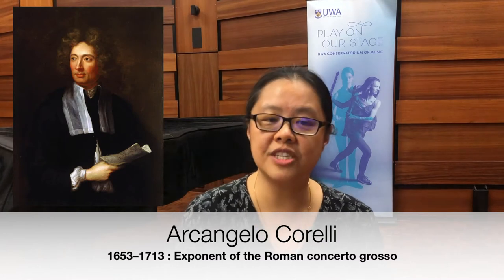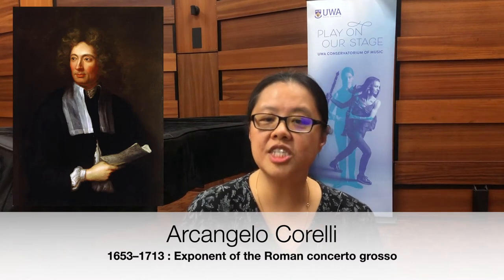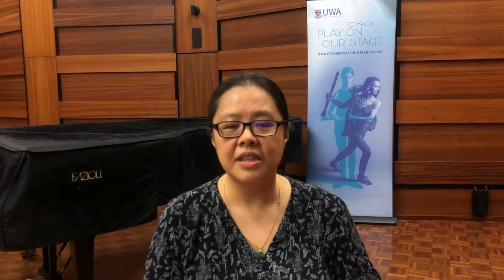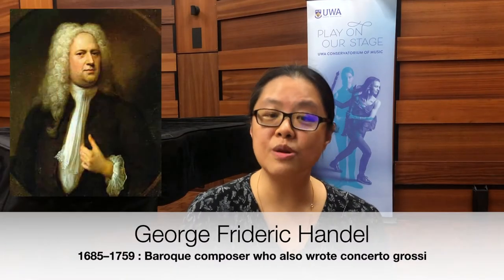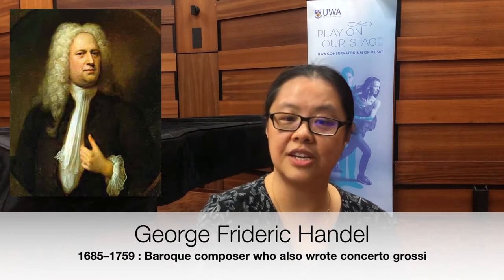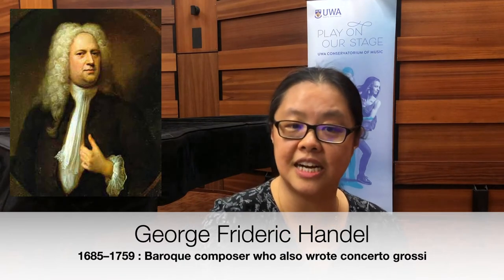Corelli's 12 concerti grossi, written for the most typical concertino of two violins and cello, are some of the earliest examples. These were most likely composed in the 1680s and published a year after his death in 1714. Inspired by Corelli, Handel published his own set of 12 Opus 6 concerti grossi in 1739.